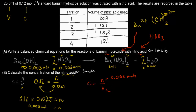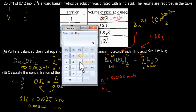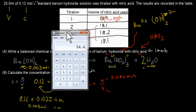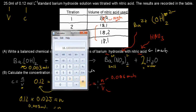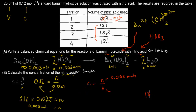Now we can figure out the volume of nitric acid from the titration results table. There are four numbers, but the first one should be ignored because the first titration is a rough titration and won't be very accurate. So we take the next three values: 18.1 + 18.2 + 18.1 = 54.4 mL. Dividing by 3 gives an average of 18.13 mL, which is 0.01813 liters.